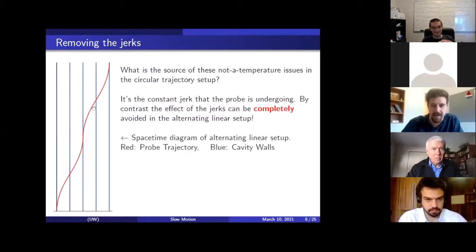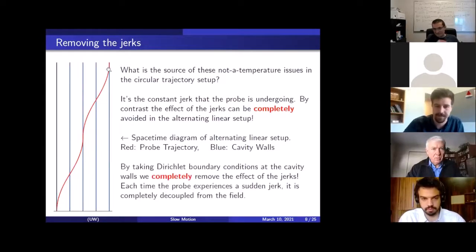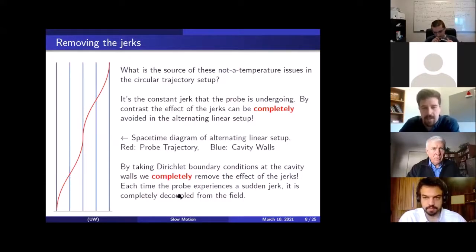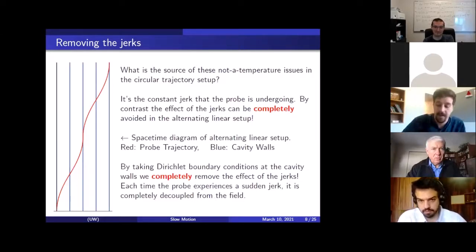And in particular, on the left here, I've got a spacetime diagram for this modified alternating linear setup that I want to talk about. So we have the red trajectory here is the probe accelerating and decelerating, accelerating and decelerating. And the new addition here are these blue things, these are cavity walls that we're introducing. They go up here, and they intersect with the trajectory at each of these acceleration switching points. So by taking Dirichlet boundary conditions at the cavity walls, we can completely remove the effects of the jerks. I do mean completely. There's no approximation to get rid of them. So each time that the probe has one of these jerks and changes its acceleration suddenly, it's completely decoupled from the field. It may want to absorb extra photons at that time, or emit extra photons at that time, but it can't because it's completely decoupled from the field.